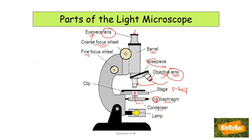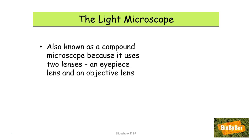The light microscope is operated by using a lamp or a mirror depending on the model. Note that there are several models of microscopes, so these parts could be in different positions and look slightly different — you'll need to apply the labels based on the picture of the microscope given in the exam. The light microscope is also known as a compound microscope because it uses two lenses: an eyepiece lens and an objective lens.